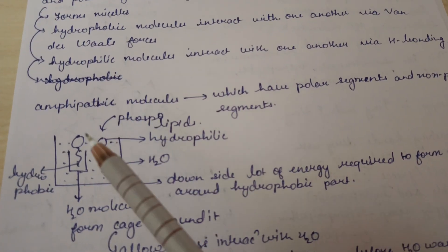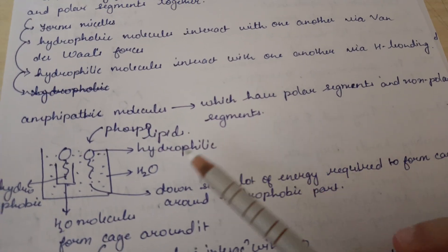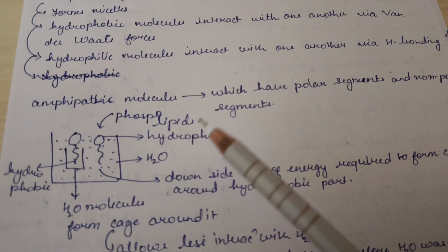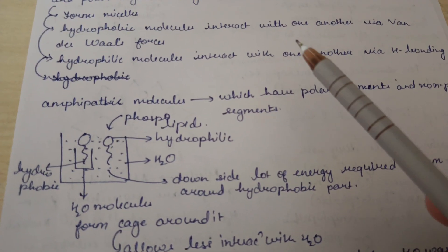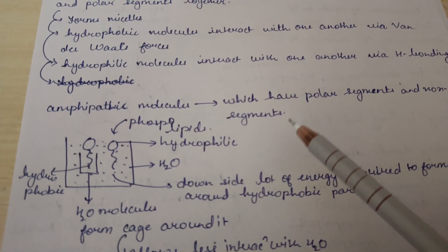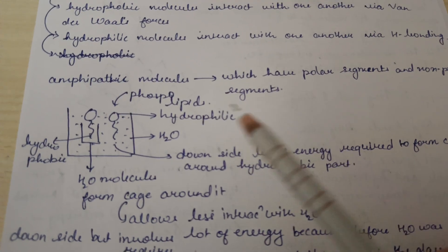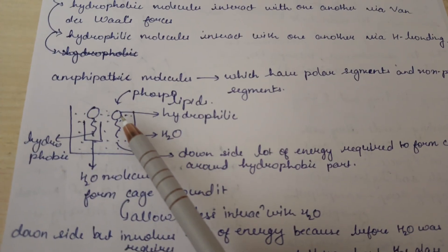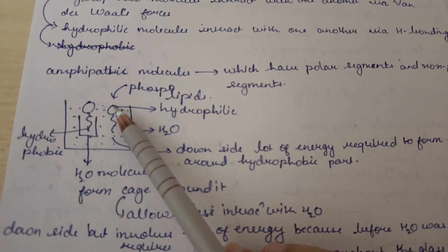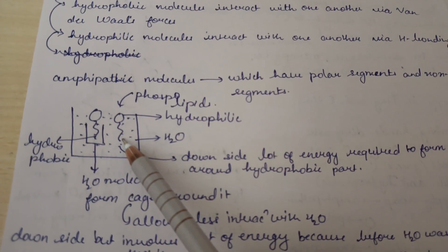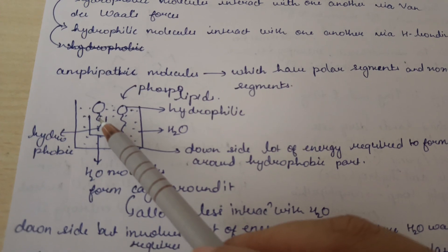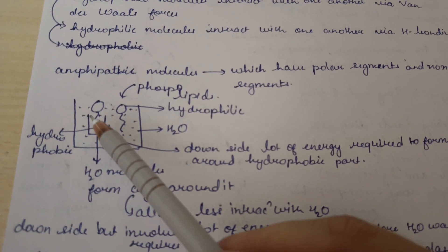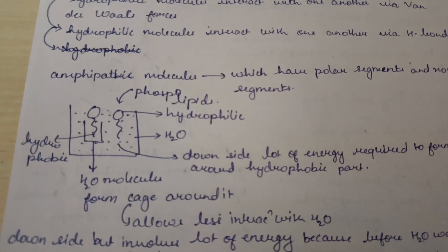To study micelles, we first need to understand amphipathic molecules. Amphipathic molecules have both polar and non-polar segments — for example, phospholipids. The phosphate group at the top is the polar, hydrophilic part, and the alkyl chain is the non-polar, hydrophobic part. When phospholipids are placed in water, the water molecules start arranging themselves around these molecules in the form of a cage-like structure.